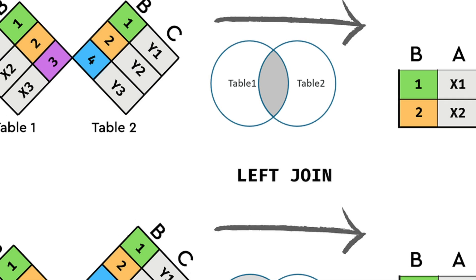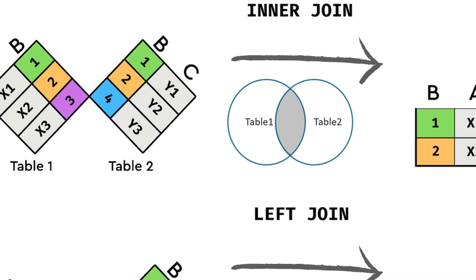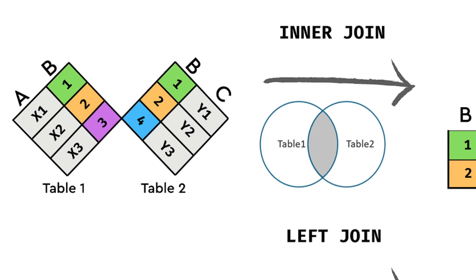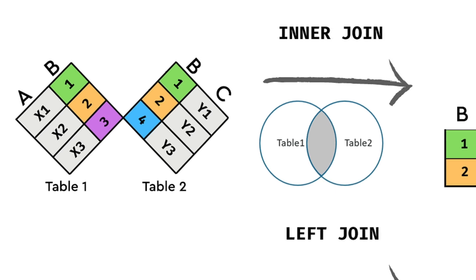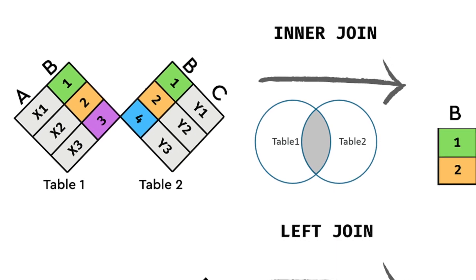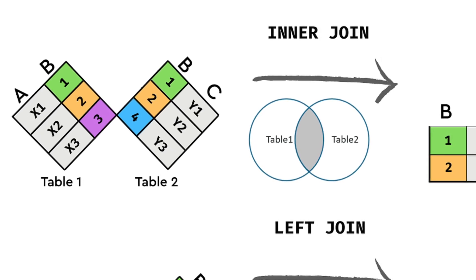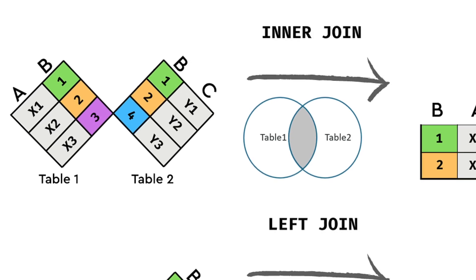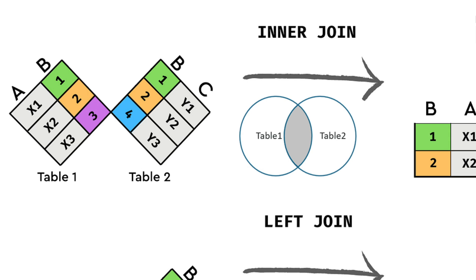This is table 1 and table 2 — two tables. In table 1, there is column A and column B. In table 2, there is column B and column C. This is a set diagram. This is the inner join.